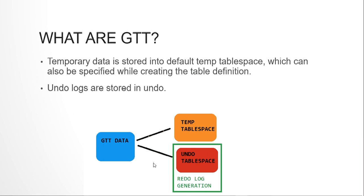However, there is indirect redo log generation. When we update data in the GTT, the updated data is stored in the undo tablespace, and this undo tablespace is protected by redo log generation. So there is an indirect redo log generation in GTTs. If you don't want to get into this detail, we will just look at how to create a GTT and use it in day-to-day code.